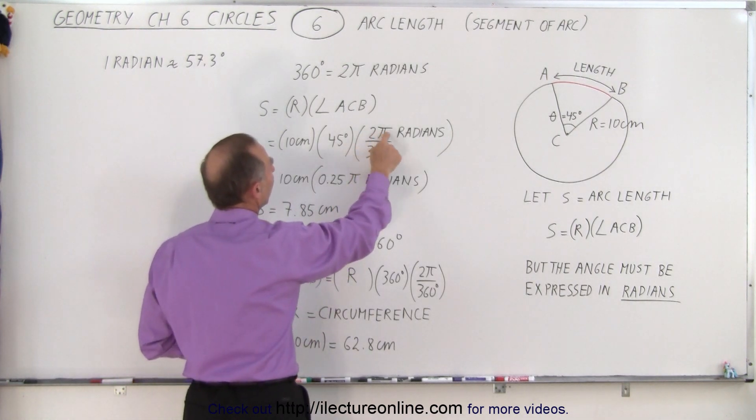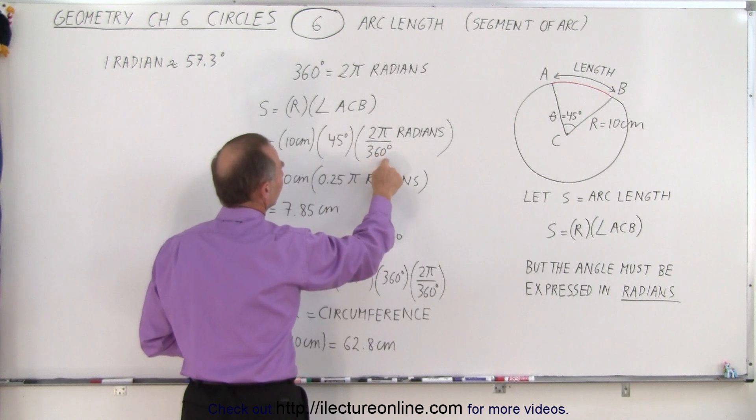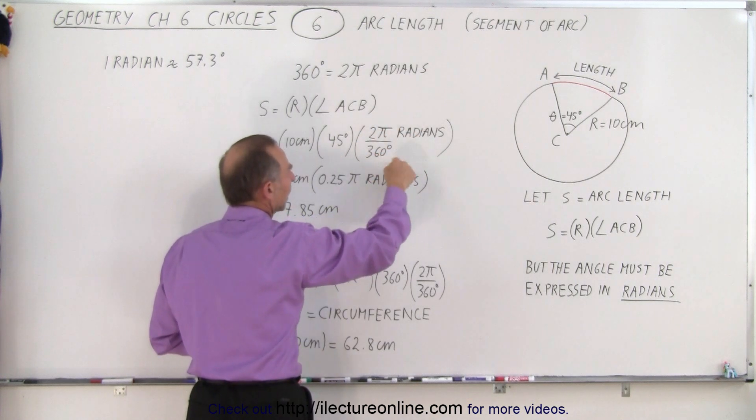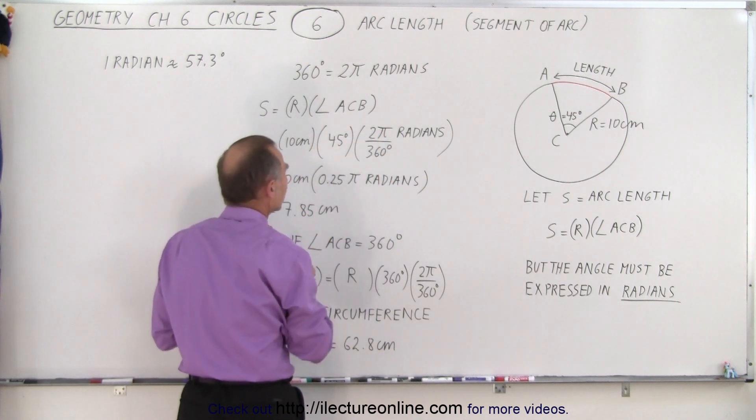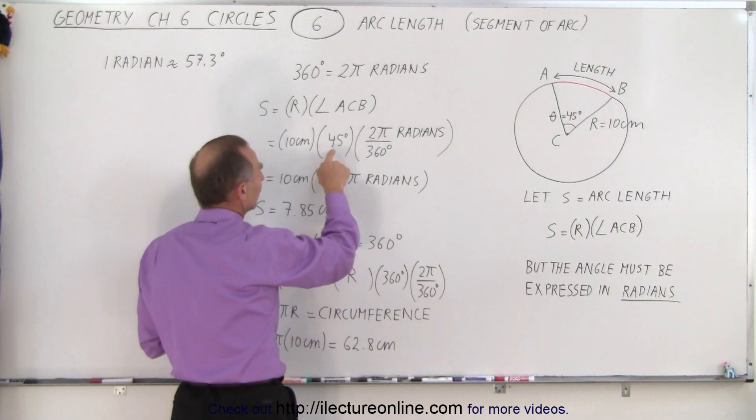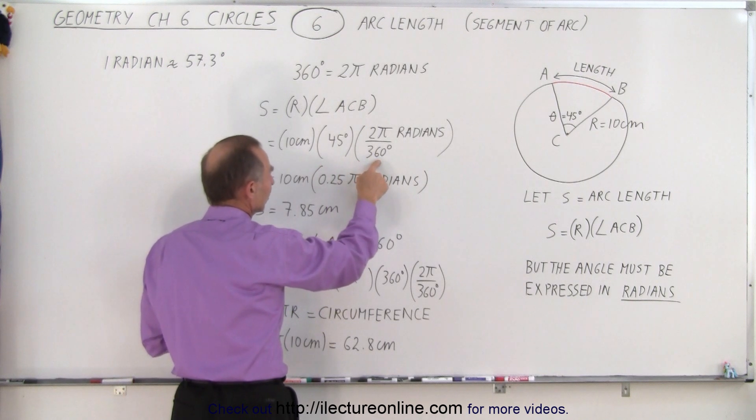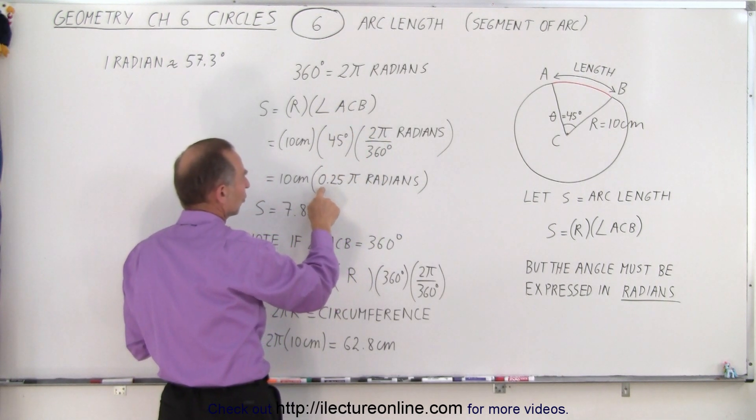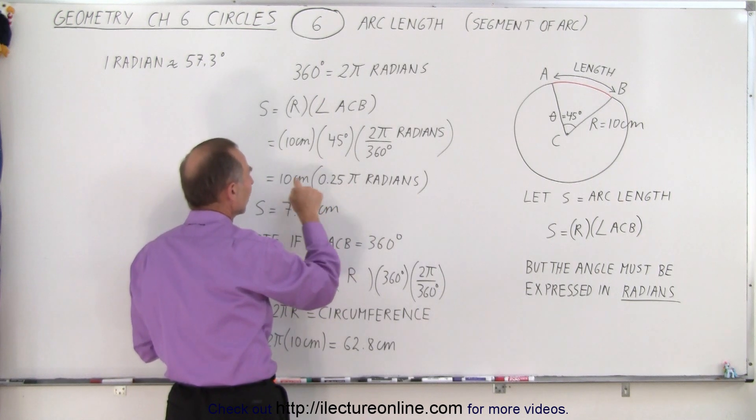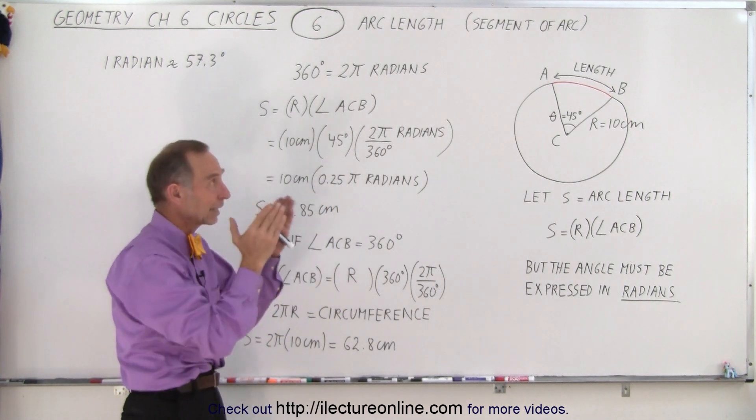So remember that 2 pi radians is the same as 360 degrees. So we're essentially multiplying by 1. We didn't change anything, just converted from degrees to the concept of radians. So that means when we take 45 degrees divided by 360, we get 1 over 8 times 2, we get 1 over 4. So 0.25 pi radians times 10 centimeters will be the length of that segment.